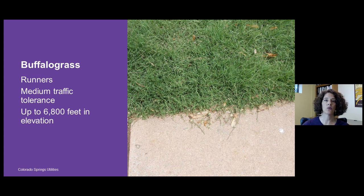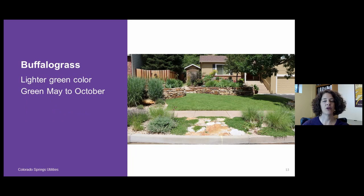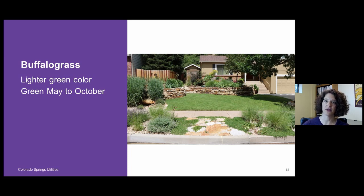Buffalo grass really only works in the Colorado Springs area up to about 6,800 feet in elevation. Above that it doesn't have a long enough growing season. It has a lighter green color than a traditional lawn, and it is green from mid-May to the beginning of October, so keep that in mind when considering it as an alternative.